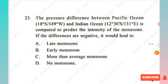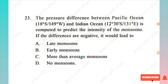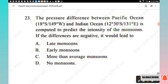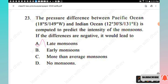Question 23: The pressure difference between the Pacific Ocean (18° South, 149° West) and the Indian Ocean (12–13° South, 131° East) is computed to predict the intensity of monsoons. If the difference is negative, it would lead to — late monsoons, early monsoons, more than average monsoons, or no monsoons. The right answer is Option A, late monsoons.